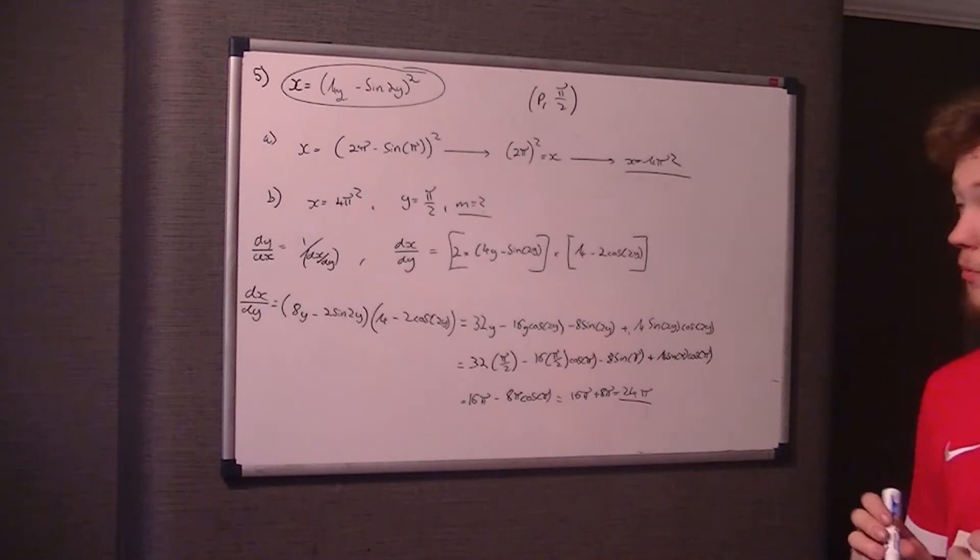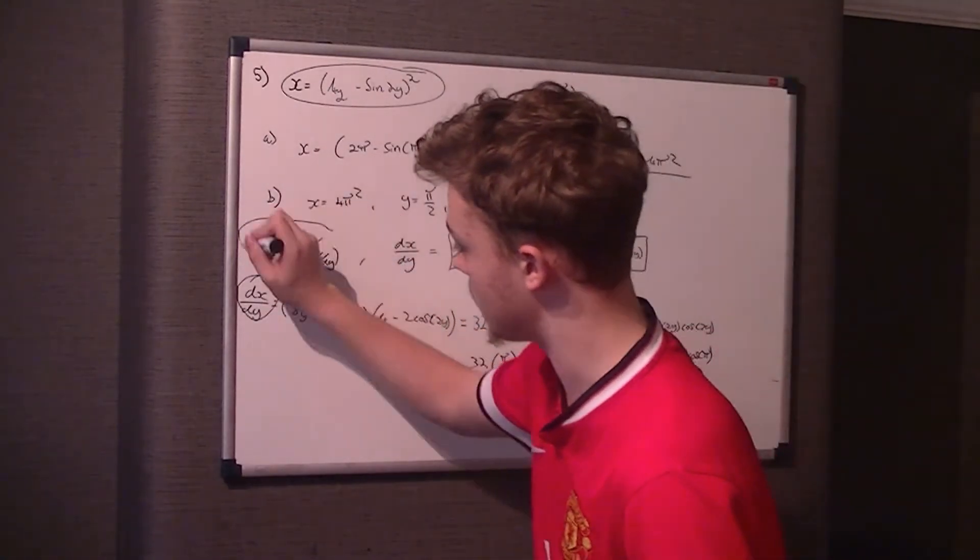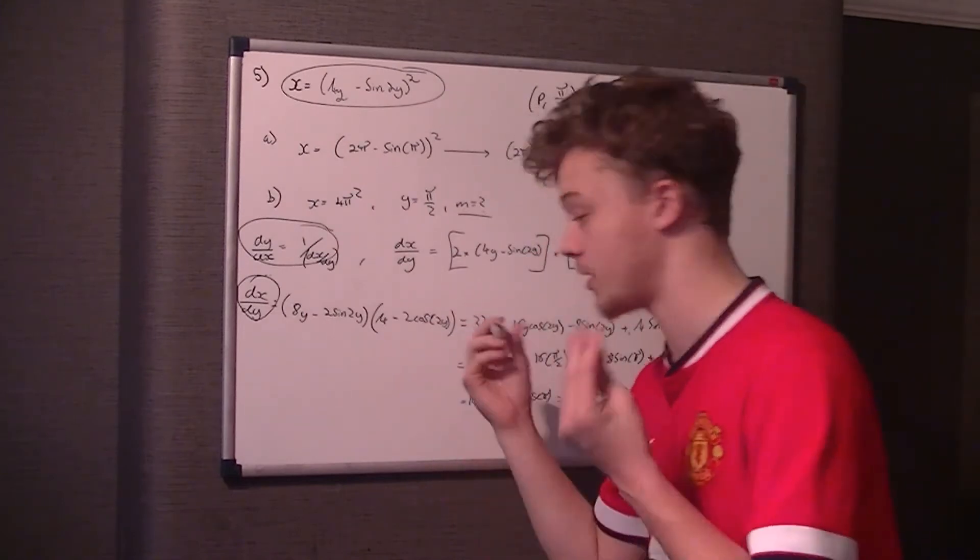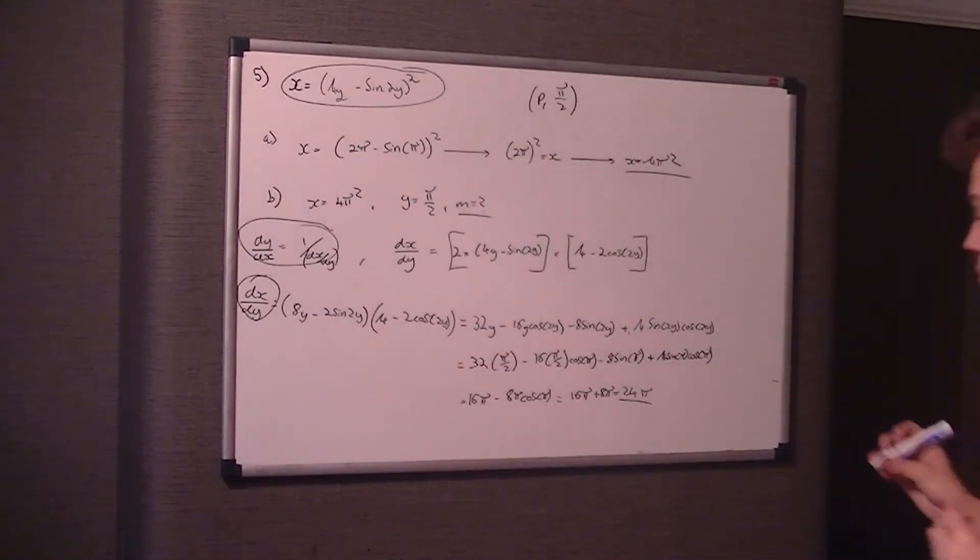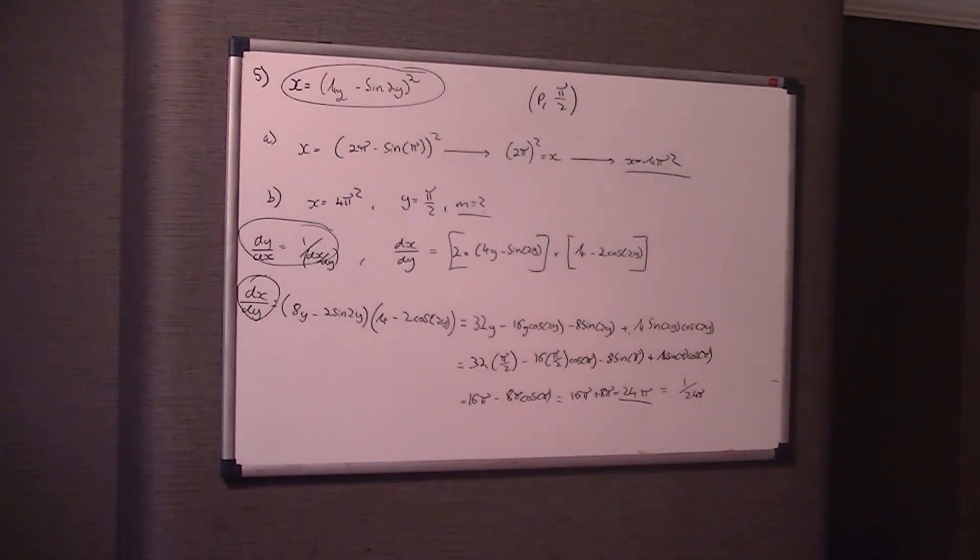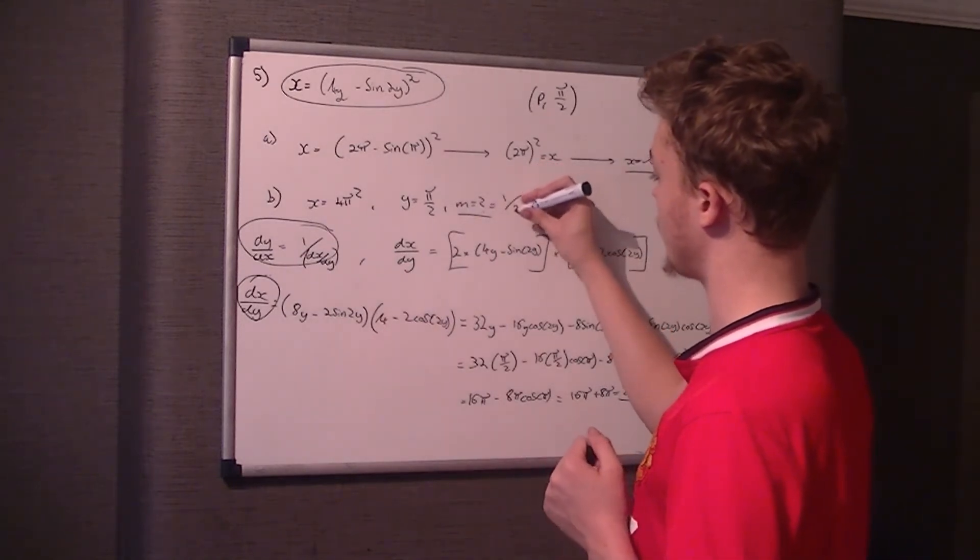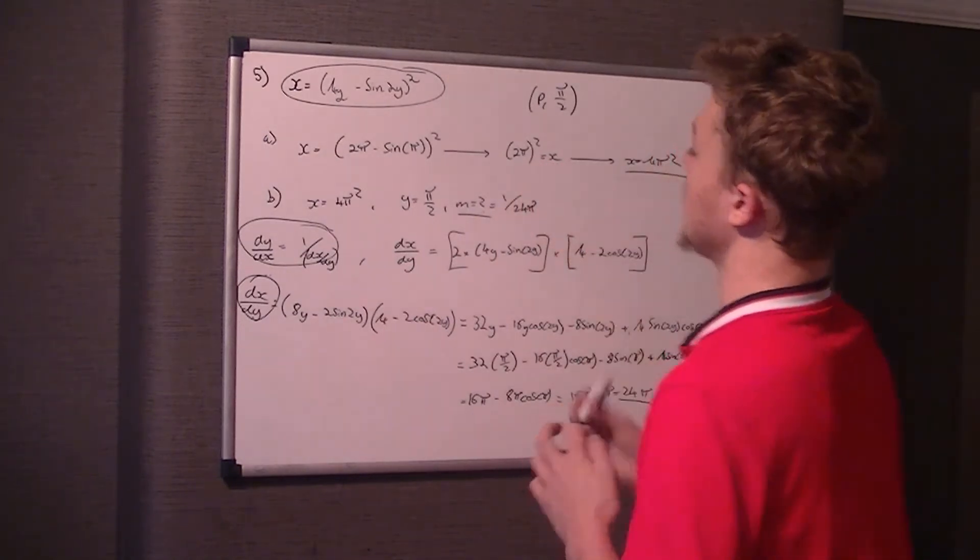However, you have to remember what we're still working out here. We're only working out dx dy. And what we actually want is dy dx. So we still have to do 1 over this for the gradient. So therefore, the gradient is 1 over 24 pi. So now we've got all the key ingredients. So the gradient is 1 over 24 pi.